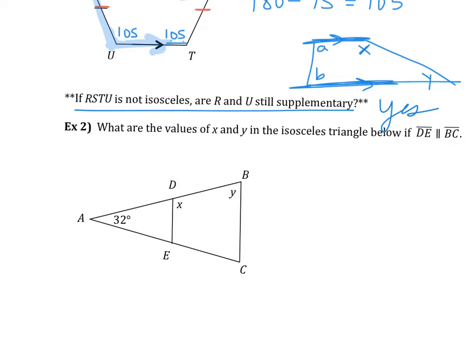Example two. It's asking what X and Y are if DE is parallel to BC. They tell us that's true, and that is an isosceles triangle. So this whole figure is an isosceles triangle. How do we find X or Y then? If I know my vertex angle is 32, you should be able to find those two. Those two will be congruent.